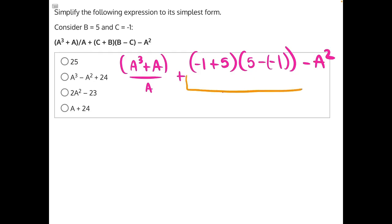Let's start by simplifying this portion first. We will have negative 1 plus 5 would give us a positive 4, times 5 minus a negative. Subtracting the negative is the same thing as adding a positive. So, this is really 5 plus 1, which would give us 6. So, we have 4 times 6, which is 24.